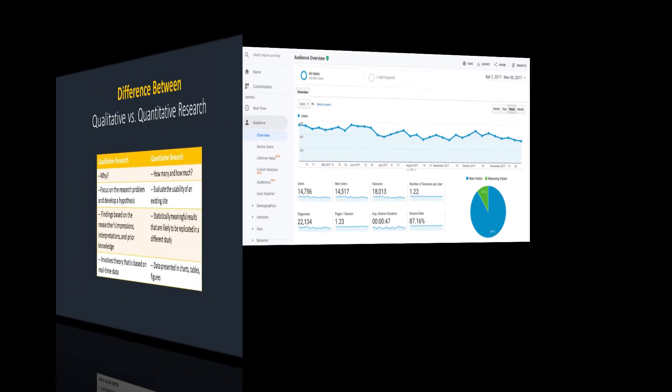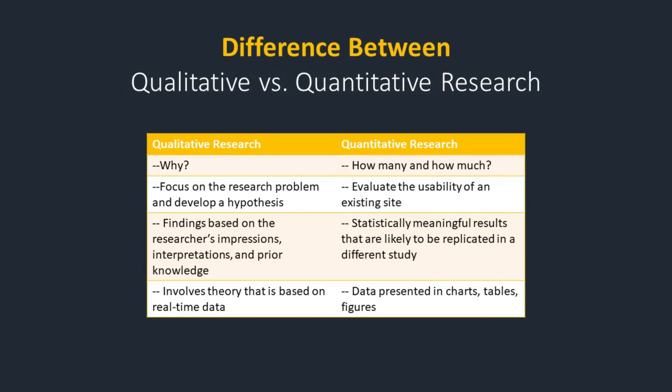Now let's look at the difference between qualitative and quantitative research. On the left side, qualitative research always begins with 'why' — what is the reason the user is choosing a certain action. It always focuses on the research problem and is based on the researcher's impressions, interpretations, and prior knowledge of any product they use.